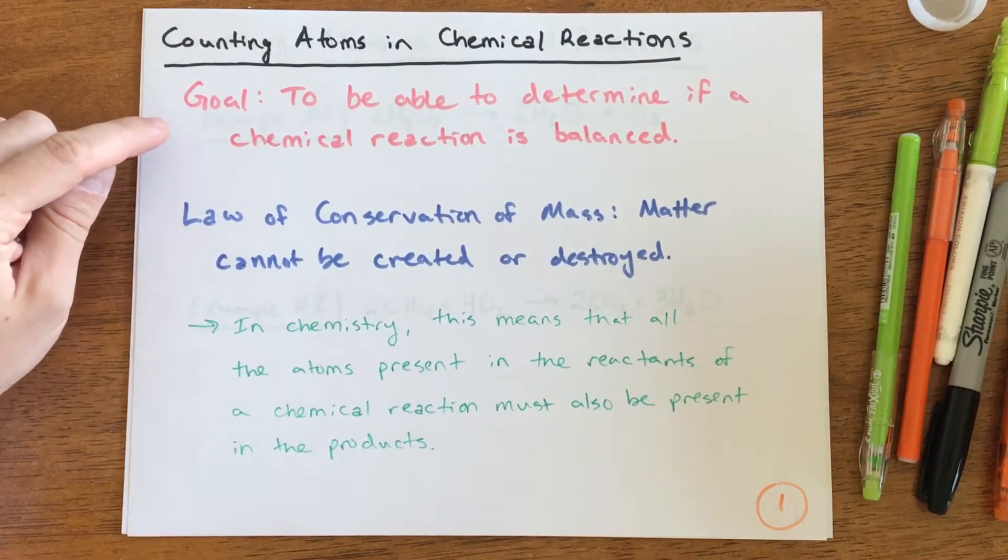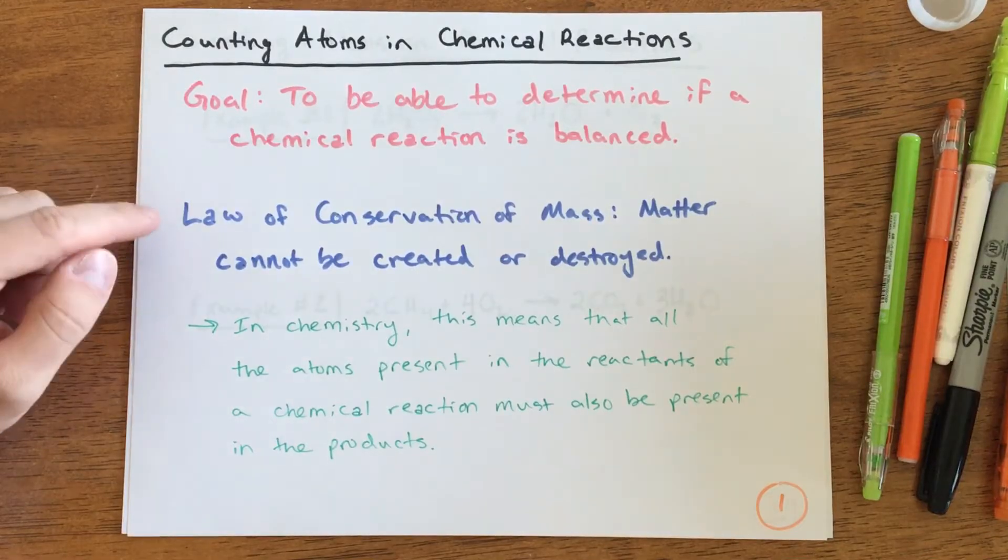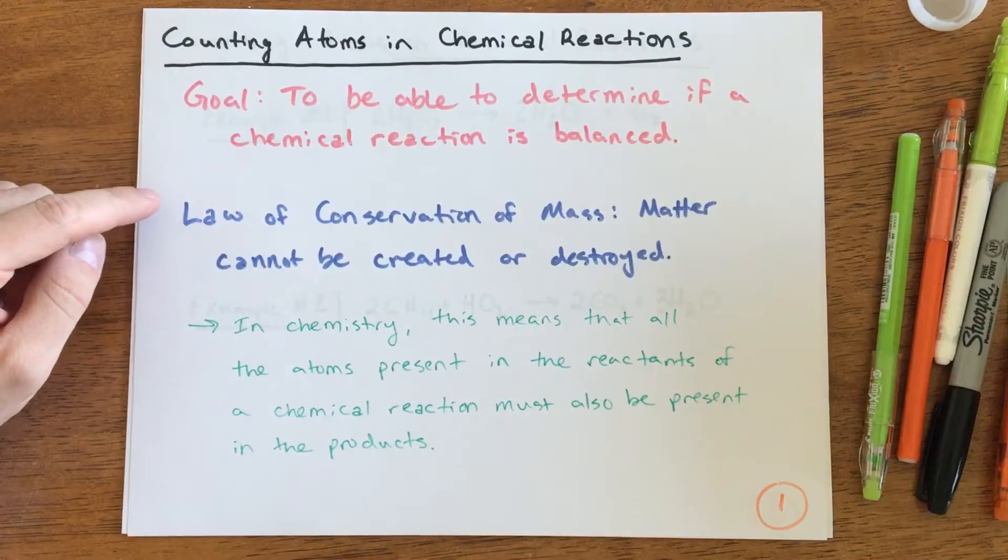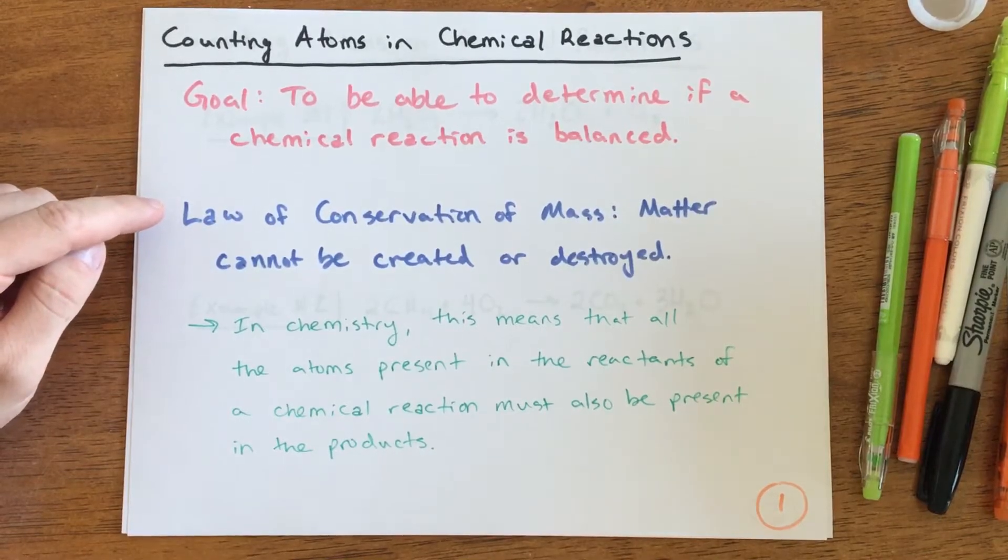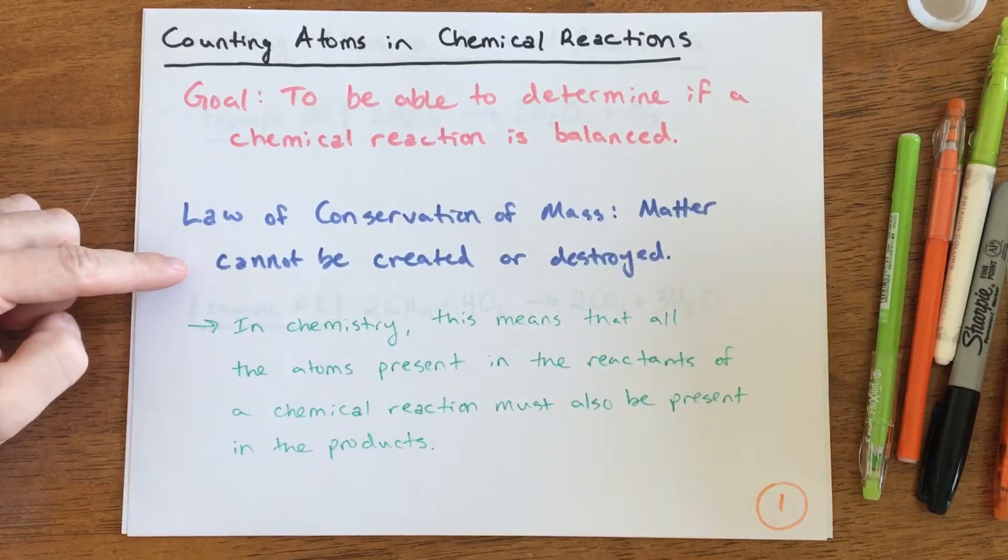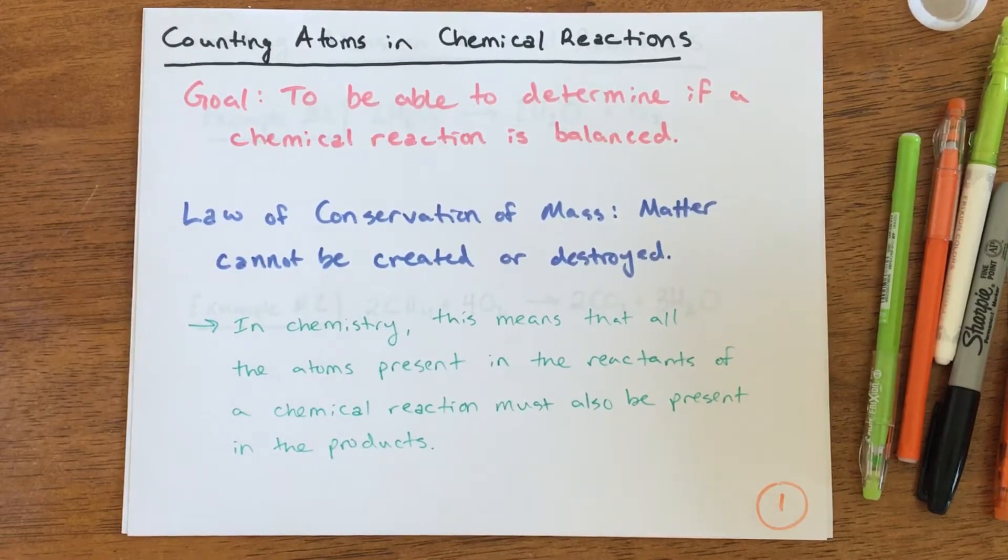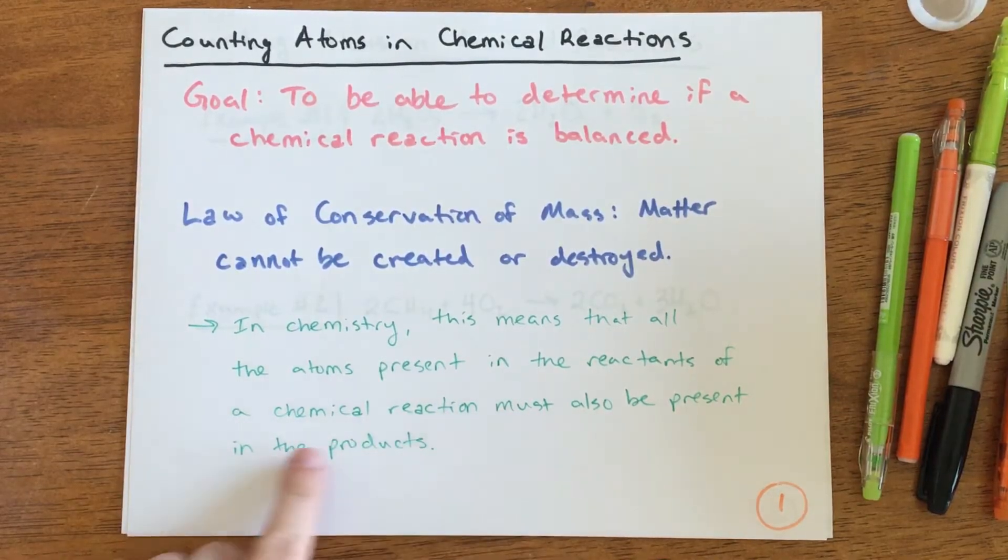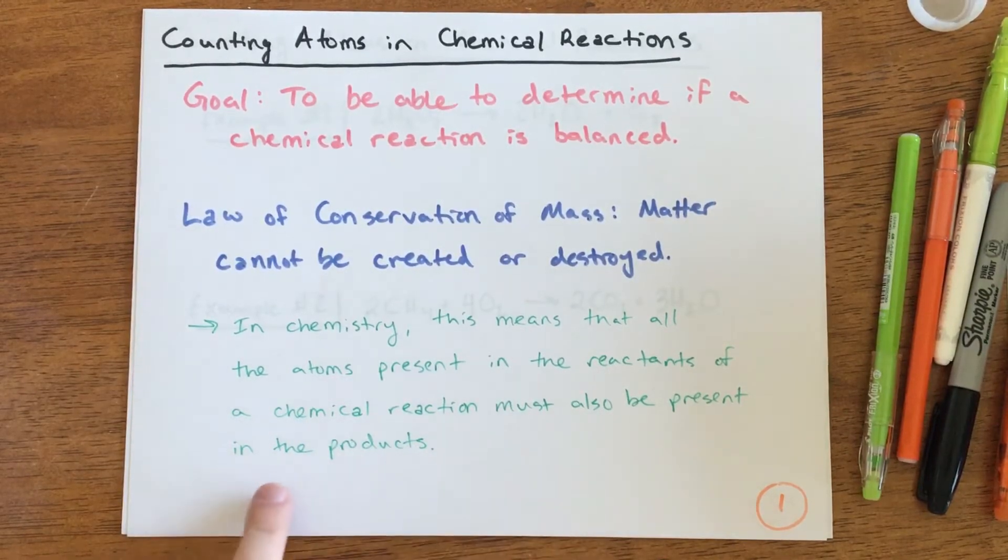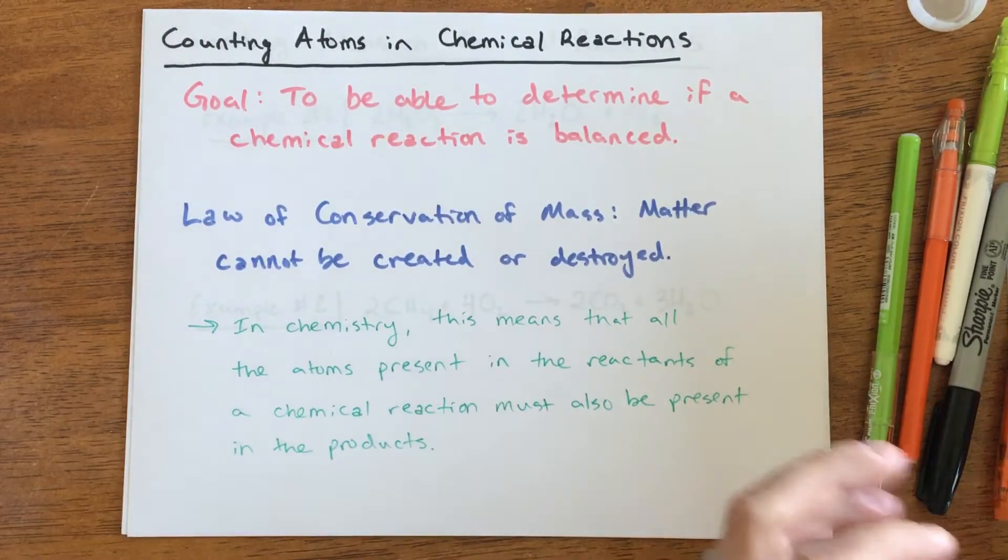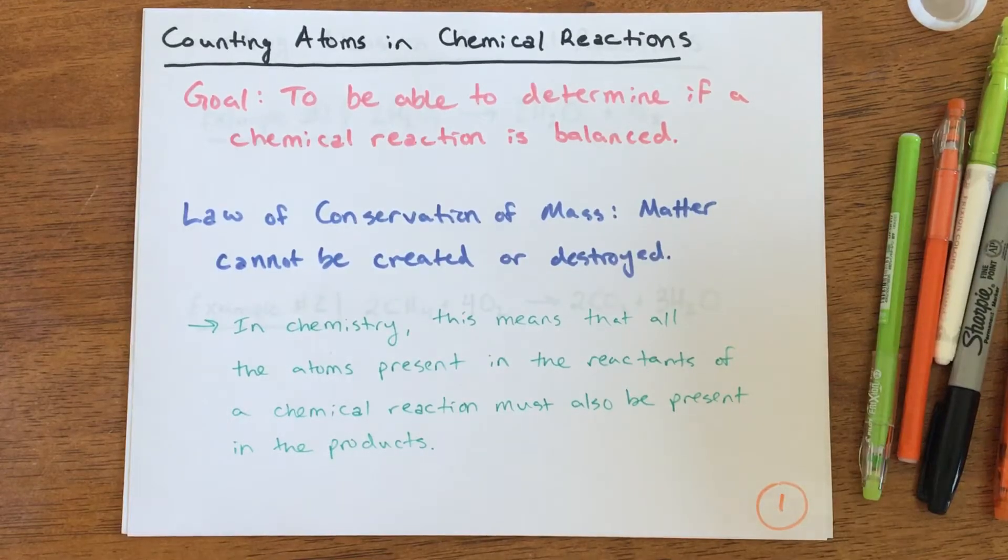We'll talk about what it means for a chemical reaction to be balanced very quickly. We've already learned about this within physics a little bit, and you've probably heard this rule before: there's a law of conservation of mass or law of conservation of matter. Matter cannot be created or destroyed. What that means for our chemical reaction equation is that in chemistry, all the atoms present in the reactants of a chemical reaction must also be present in the products. We cannot create or destroy those.